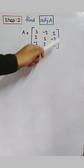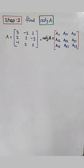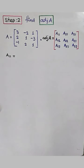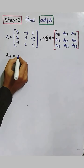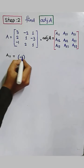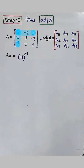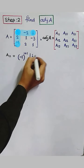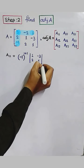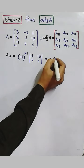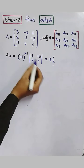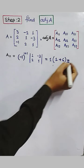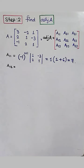Step 2: we will find adjoint A. Adjoint A is formed from all the cofactors. The cofactor A11 of the element 3: minus 1 to the power 1 plus 1, with first row and first column cancelled out, leaving the determinant [1, minus 3; 2, 1]. Minus 1 to the power 2 equals 1, and the determinant value is 1 times 1 minus (minus 3 times 2) equals 1 plus 6 equals 7. So A11 equals 7.